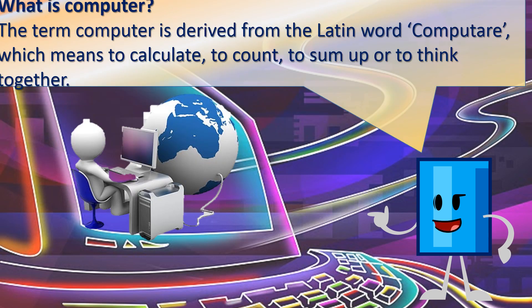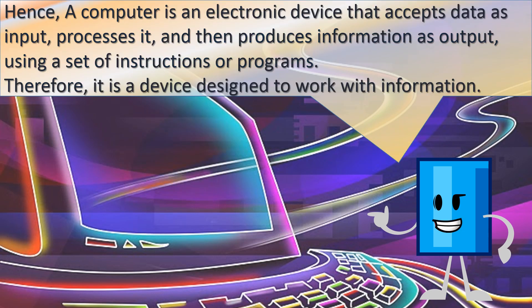What is a Computer? The term Computer is derived from the Latin word 'computare' which means to calculate, to count, to sum up, or to think together. Hence, a computer is an electronic device that accepts data as input, processes it, and then produces information as output using a set of instructions or programs. It is a device designed to work with information.